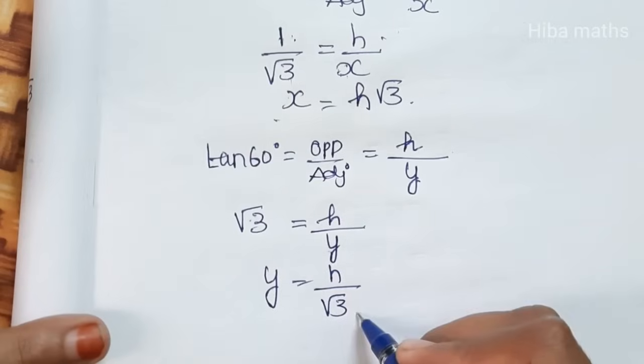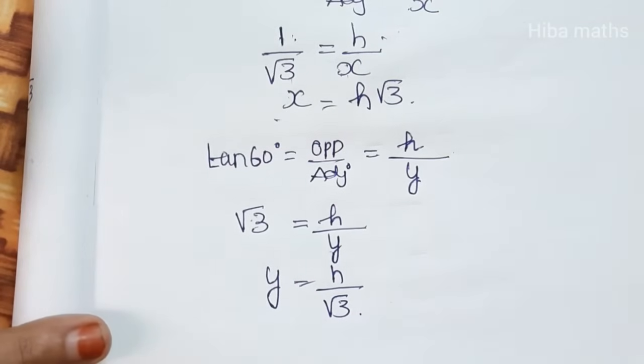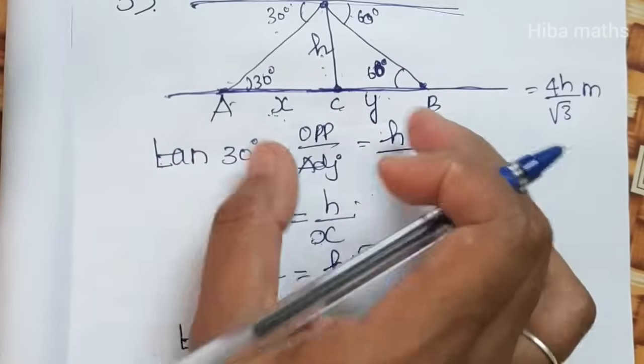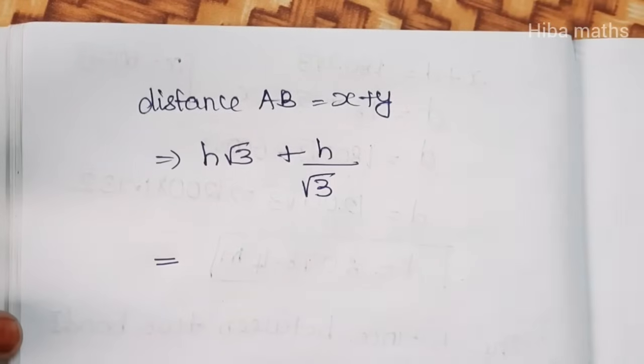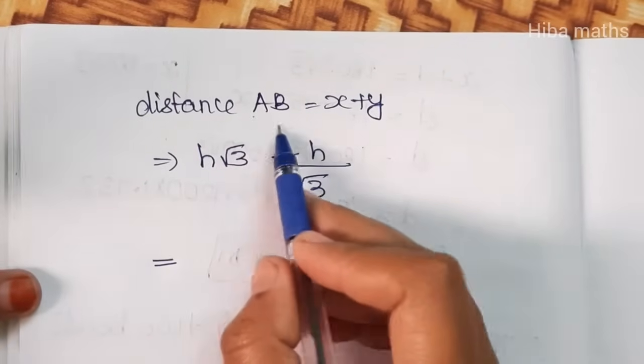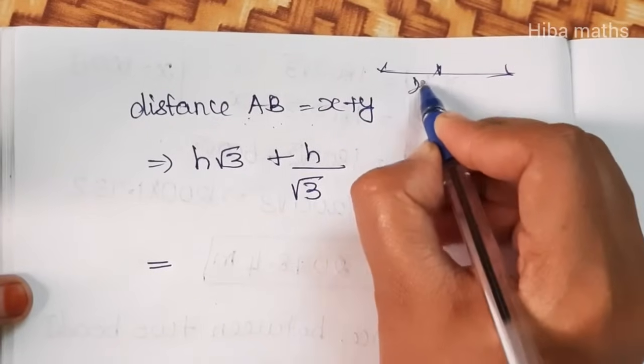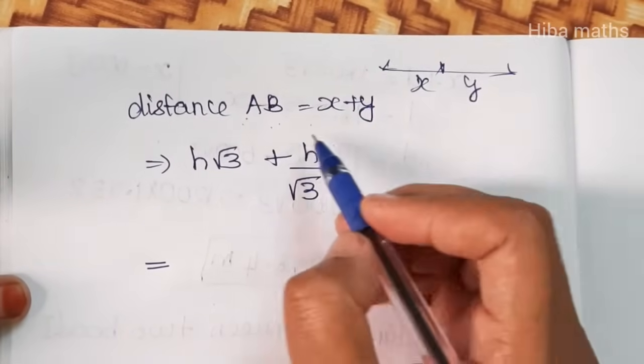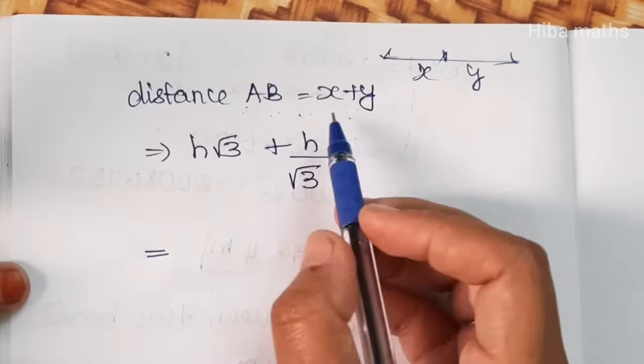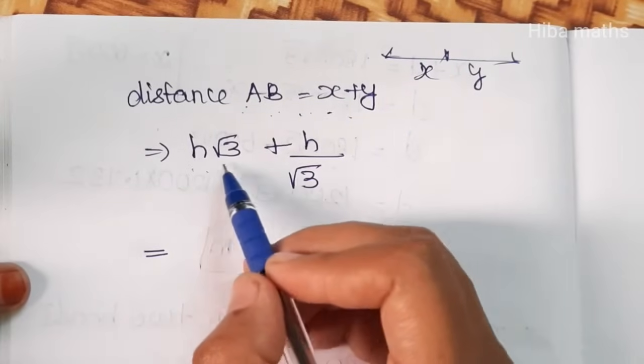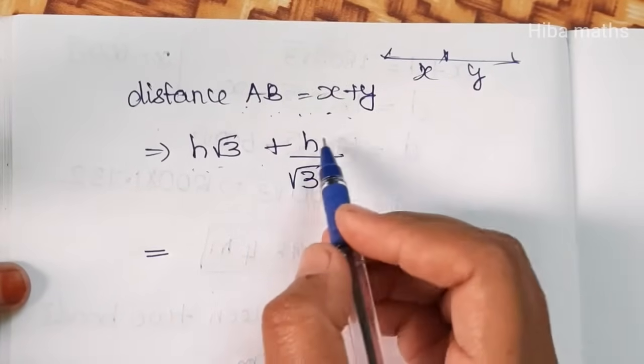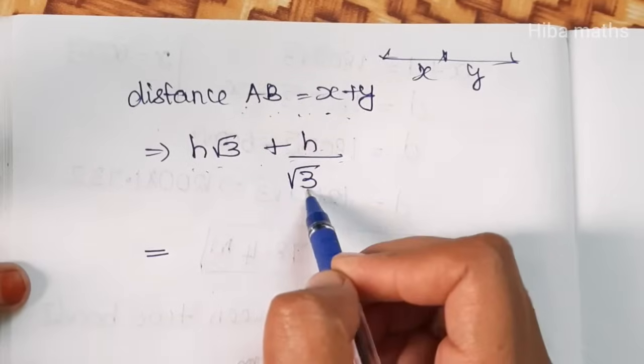So now we add x and y. The distance AB equals x plus y. x equals h root 3 plus y equals h by root 3.